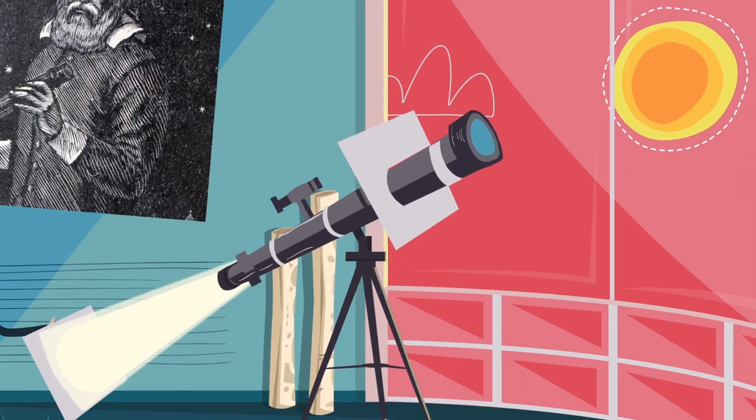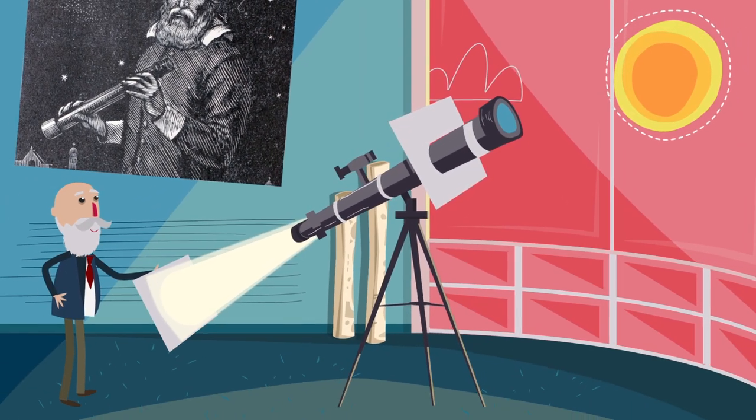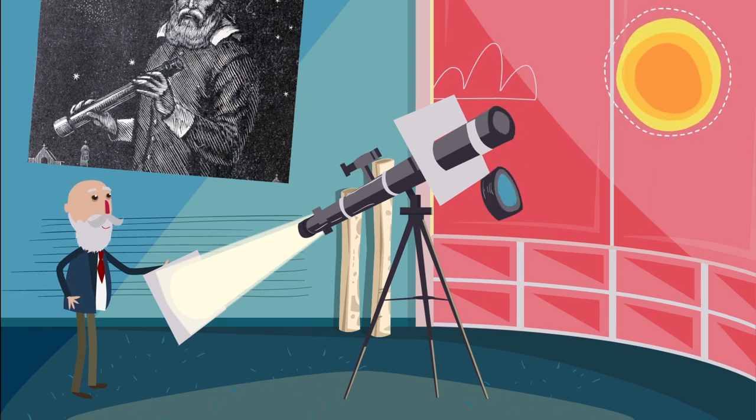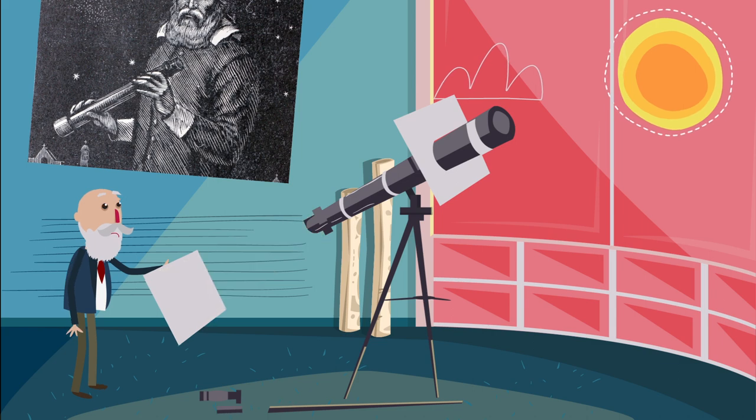Nach seinem Abschluss wechselte er an das Observatorium der Universität von Durham, wo er Sterne, Kometen und Asteroiden studierte. Leider war das Observatorium nicht gut ausgestattet.